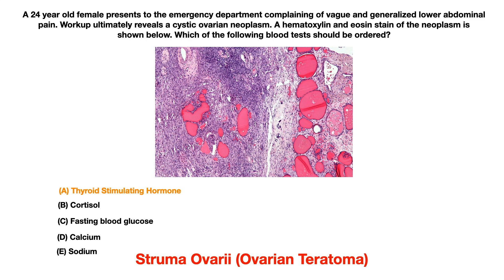Then the question will pivot — they'll either show you a histological slide of thyroid tissue, or they will describe the full blown symptoms of fulminant hyperthyroidism. You'll have to piece together the fact that you have symptoms suggesting an ovarian neoplasm plus the symptoms of hyperthyroidism, and then they'll ask what lab should you order or what is the diagnosis.